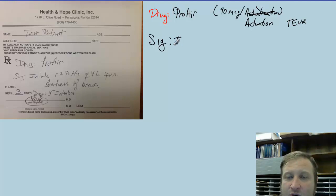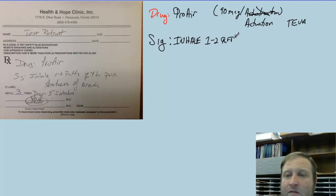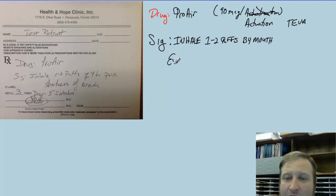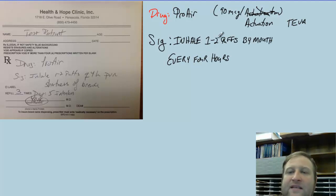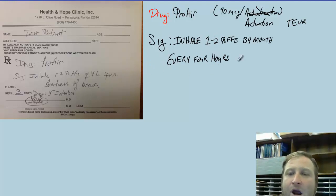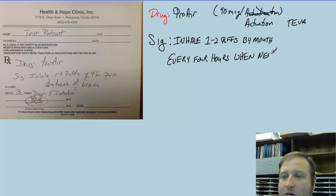So we're going to tell the patient to inhale one to two puffs by mouth — I like to insert 'by mouth' to make sure they know they inhale it by mouth — every four hours, PRN meaning when needed, for shortness of breath.